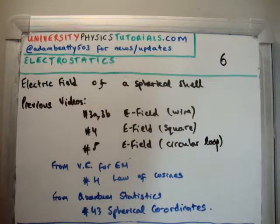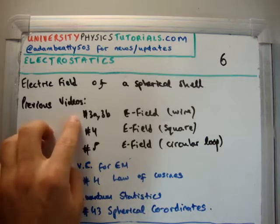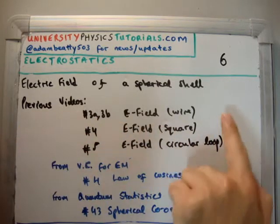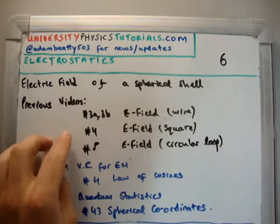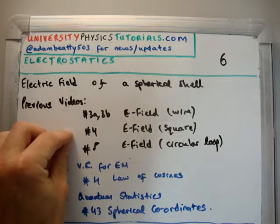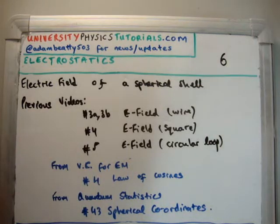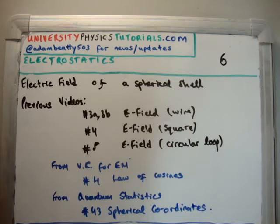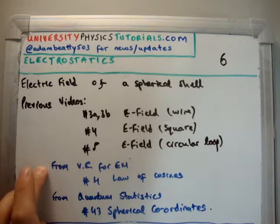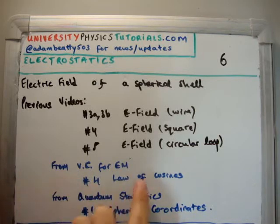There are a number of videos which are relevant to this before you attempt this particular question. On my videos on electrostatics, we're going to be looking at videos 3A and B, which are the electric field of a wire with symmetry and without symmetry, 4 for a square, and 5 for the electric field of a circular loop. However, this one is going to be much more difficult and a more practical and important example — you need to be able to do this. I recommend that you watch a video from my Vector Calculus for Electromagnetism series, specifically number four where I discuss the law of cosines, which I'll be using in this video.